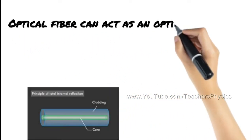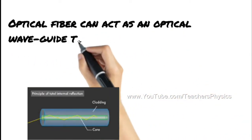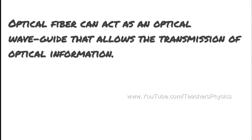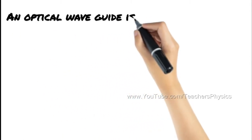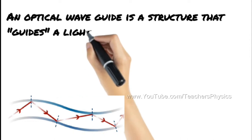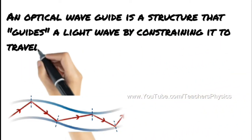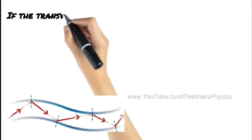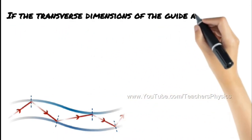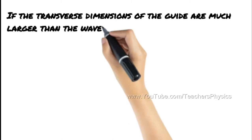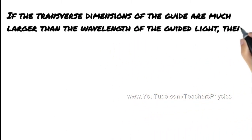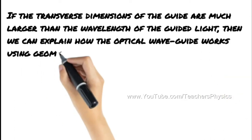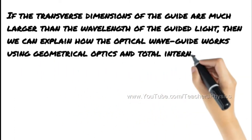Optical fiber can act as an optical waveguide that allows the transmission of optical information. An optical waveguide is a structure that guides a light wave by constraining it to travel along a certain desired path. If the transverse dimensions of the guide are much larger than the wavelength of the guided light, then we can explain how the optical waveguide works using geometrical optics and total internal reflection.